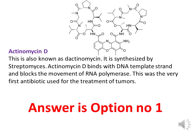Actinomycin D is also known as dactinomycin. The structure is shown here — it is synthesized by Streptomyces bacteria. Actinomycin D binds to the DNA template strand and blocks the movement of RNA polymerase; it stops RNA polymerase movement. This is the mechanism of inhibition shown by actinomycin D. It is a well-used antibiotic in treating tumors. So option A is the correct answer.